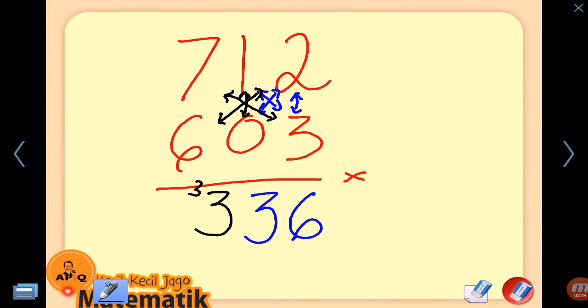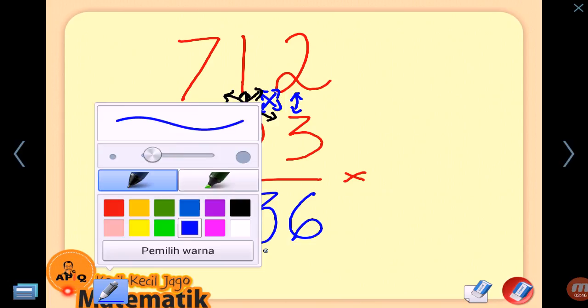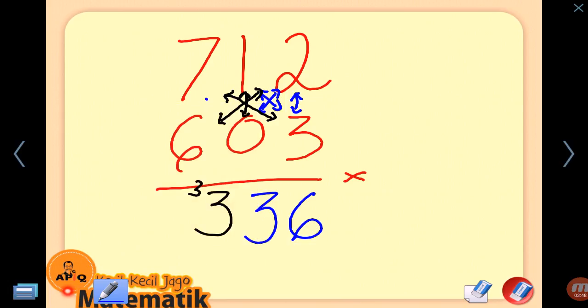Fourth step: 7 times 0 is 0, 6 times 1 is 6. 6 times 1 is 6.